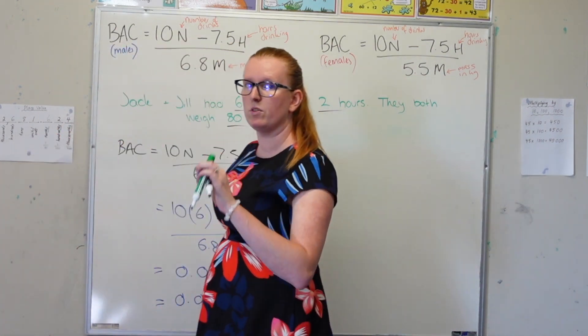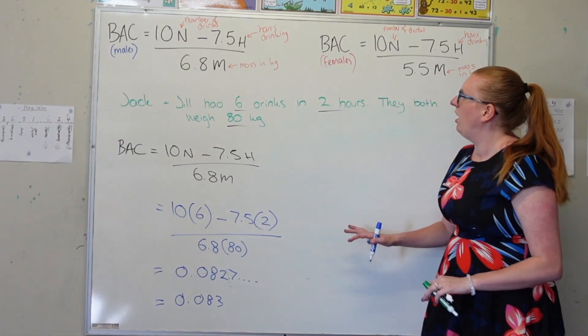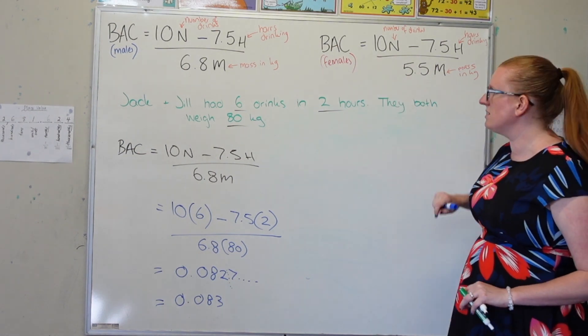Jack has a blood alcohol concentration of 0.083. So in New South Wales, he is over the legal limit to drive. All right, cool. Let's have a look at his sister, Jill.